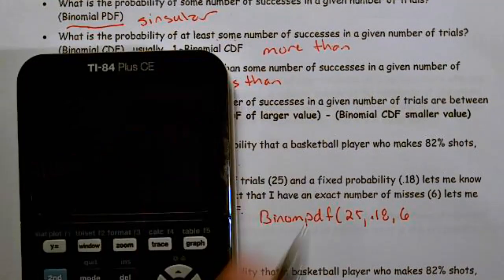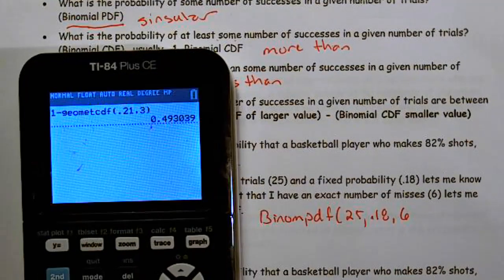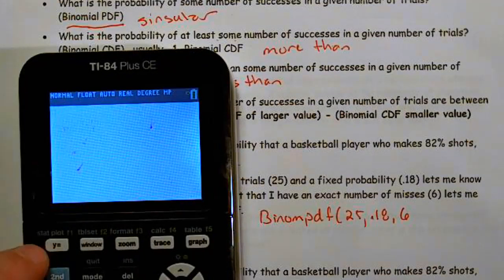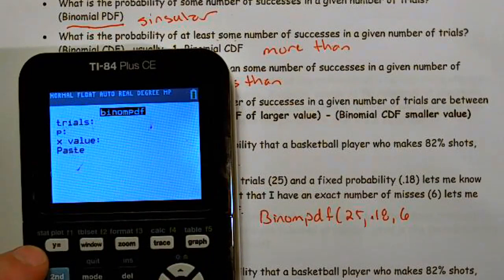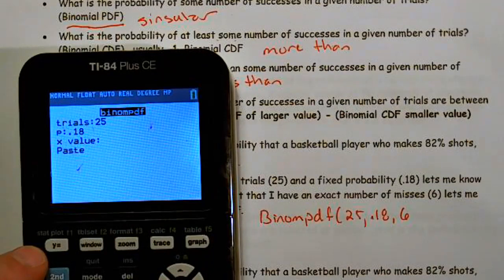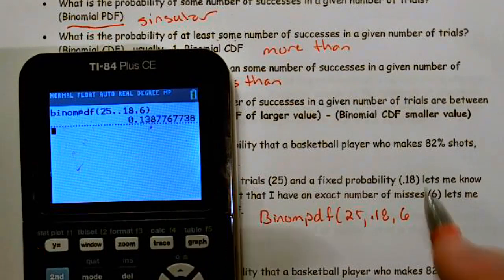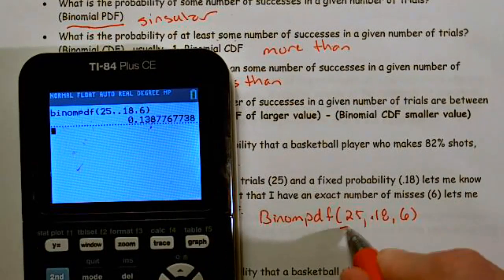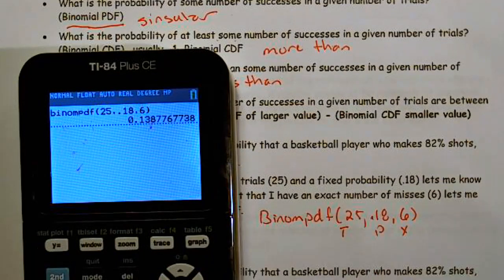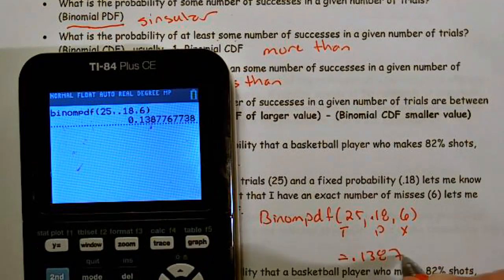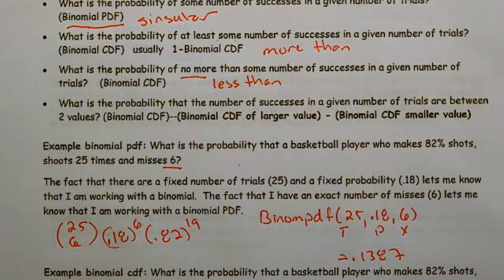Let's try that out. Second VARS, binomial PDF: trials is 25, P is 0.18, and our X value is 6. That's trials, probability, X. We end up getting 0.1387.